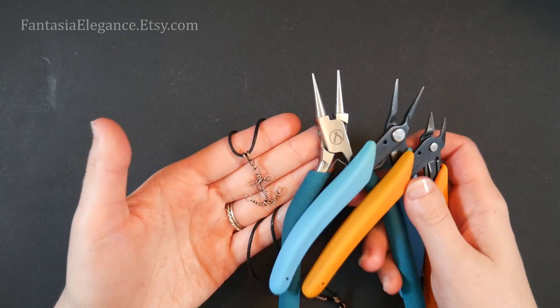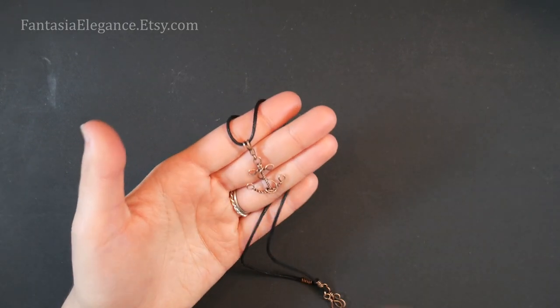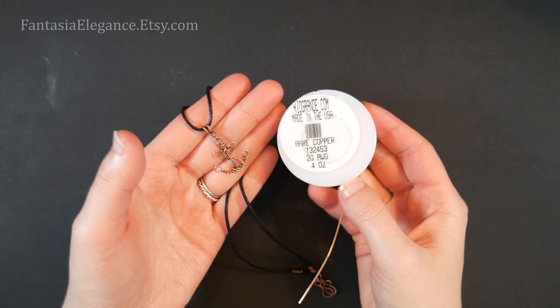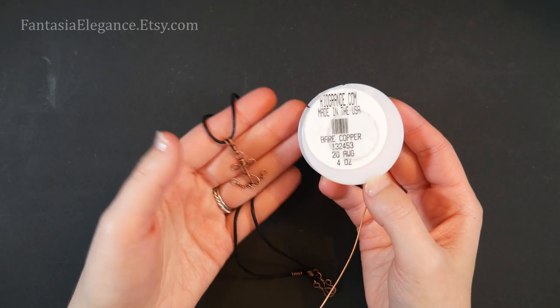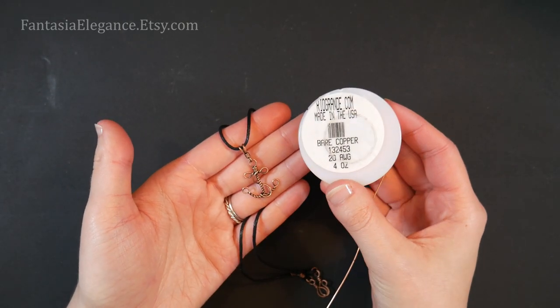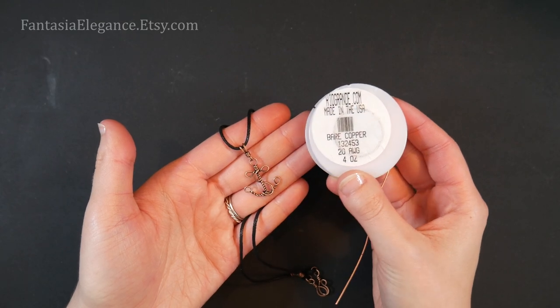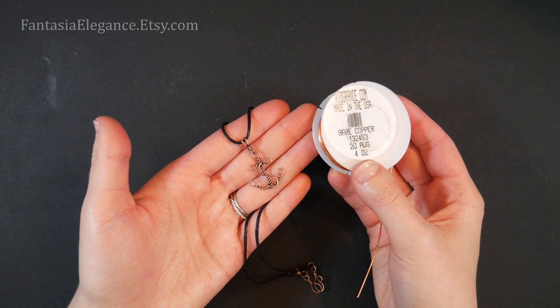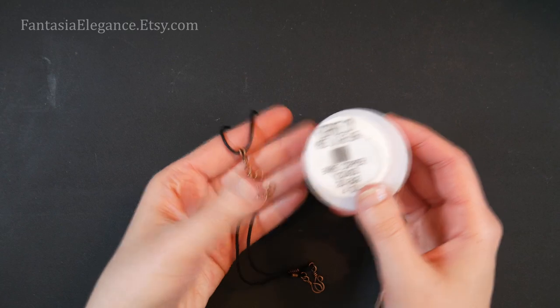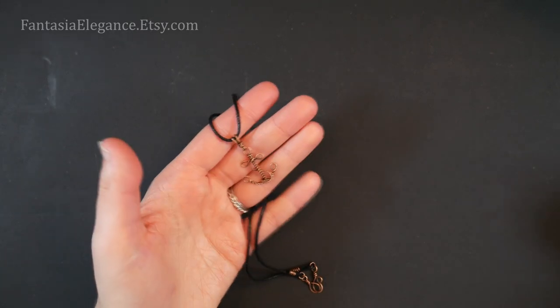The actual pendant itself will be made with just one strand of 20 gauge round dead soft wire. I'll be using copper wire from riogrande.com. You can use any kind you like, of course. As I said, we'll be using just one strand of this and the measurements I'm going to be using are for a fairly small pendant.